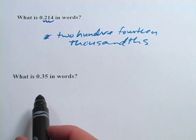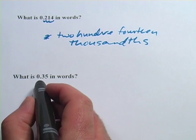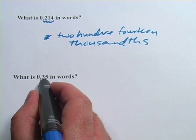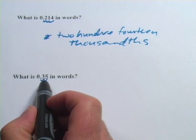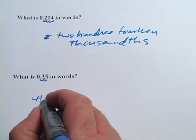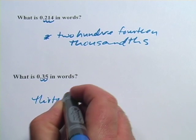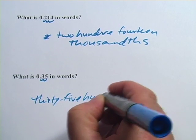Let's look at one more here. It says, what is 0.35 in words? Again, I want to look at the places. We have tenths and then hundredths. So this is going to be in hundredths. And then we have a 35 there. So it is 35 hundredths.